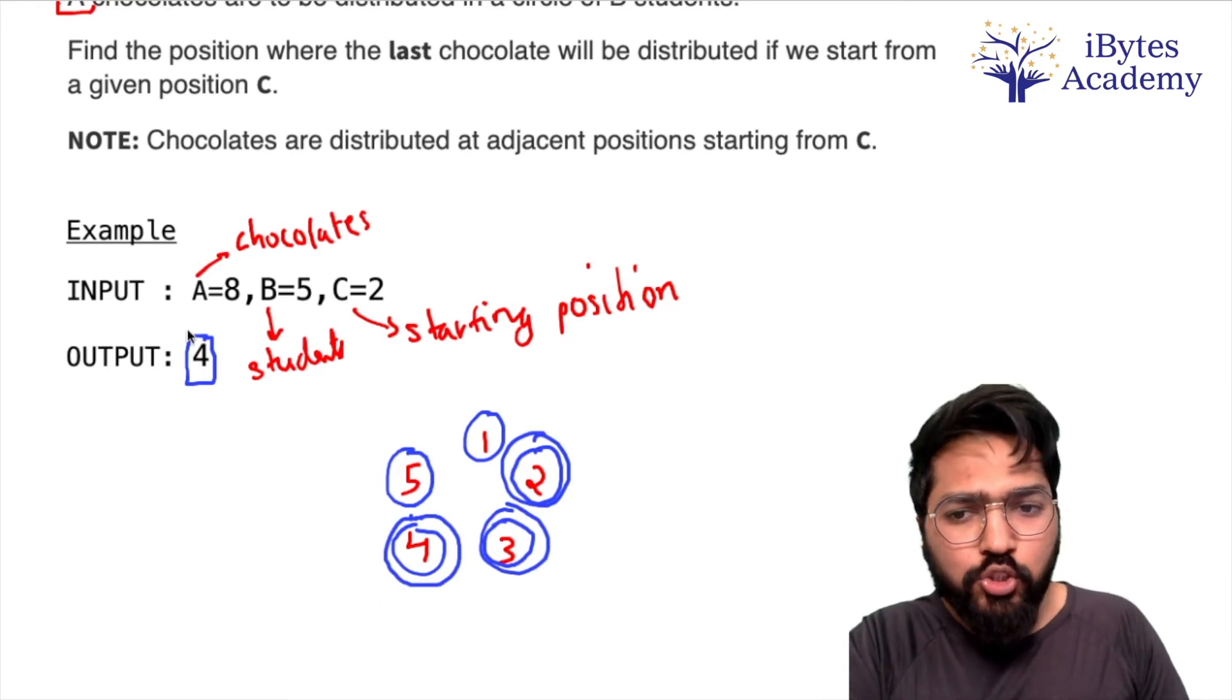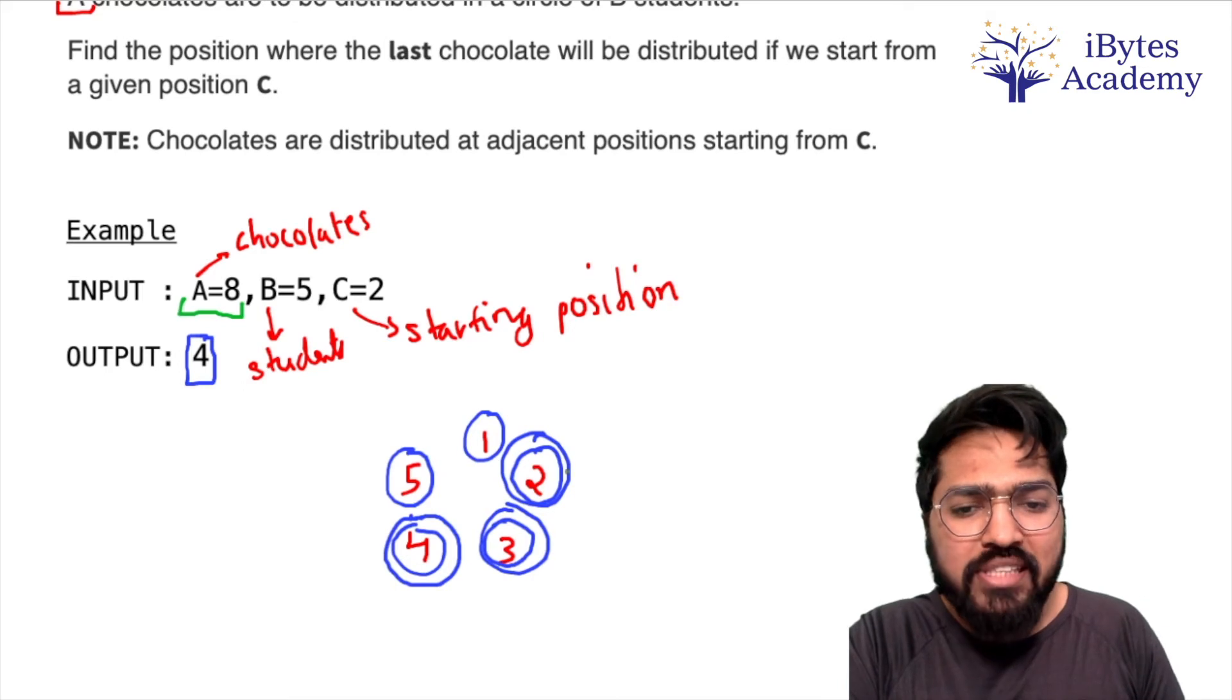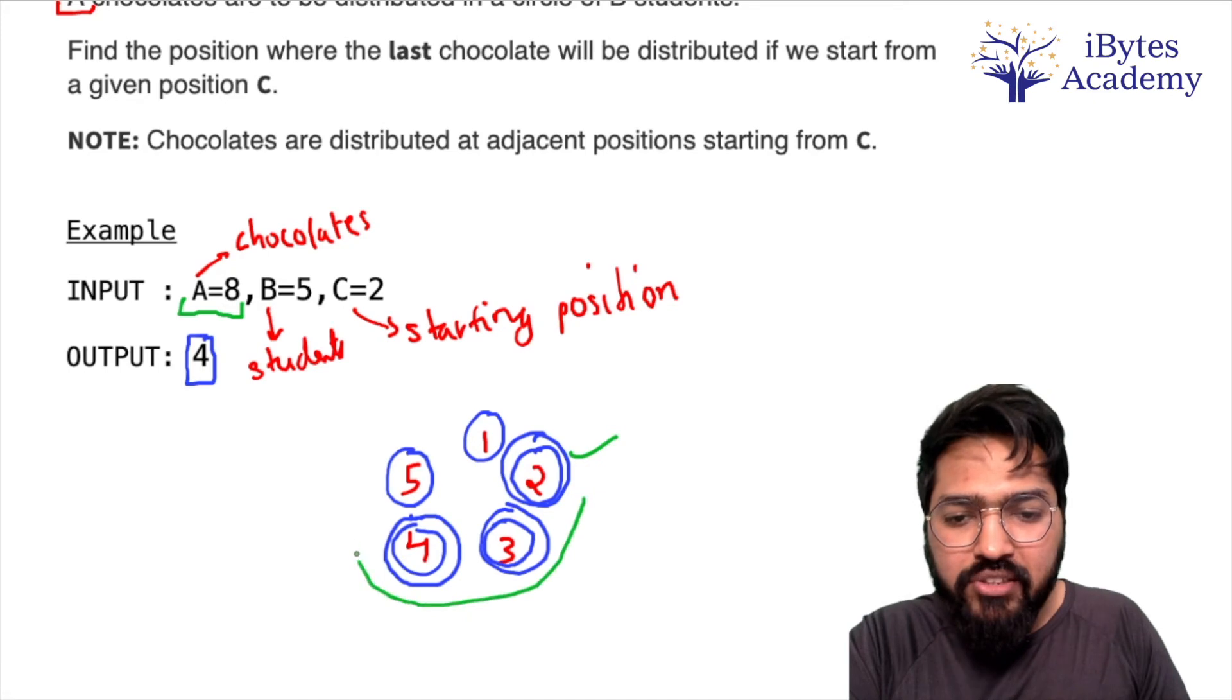A very basic solution could be ki hum log ek loop chala lein which is going to run A number of times, and obviously our starting position is C equals 2, aur hum log ek ke kar ke aage badhte jayenge.